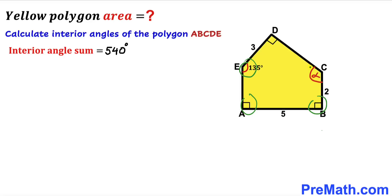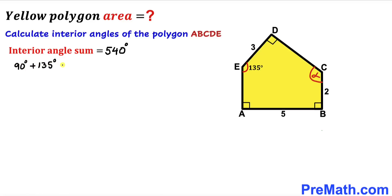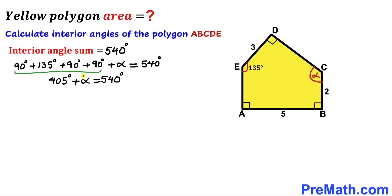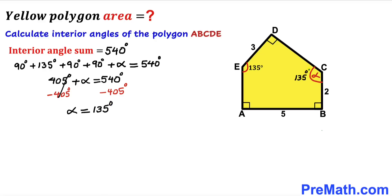Let me label this unknown angle as alpha. The sum of all interior angles must equal 540°, so: 90° + 135° + 90° + 90° + alpha = 540°. Adding the known angles gives 405° + alpha = 540°. Subtracting 405° from both sides, our angle alpha turns out to be 135 degrees.